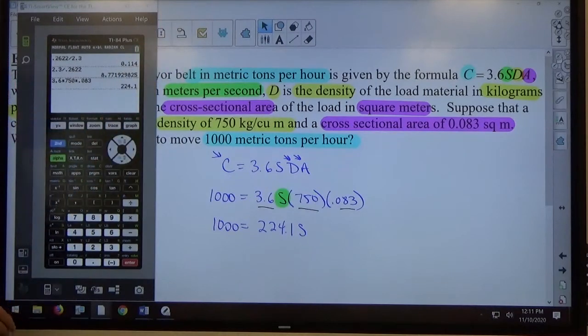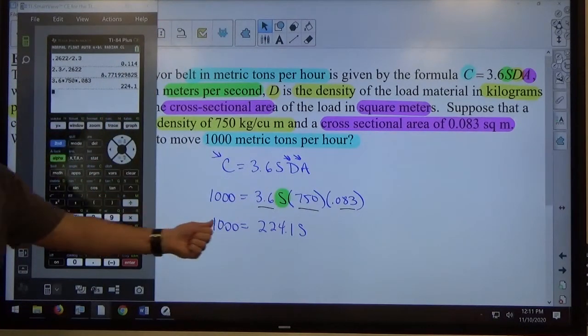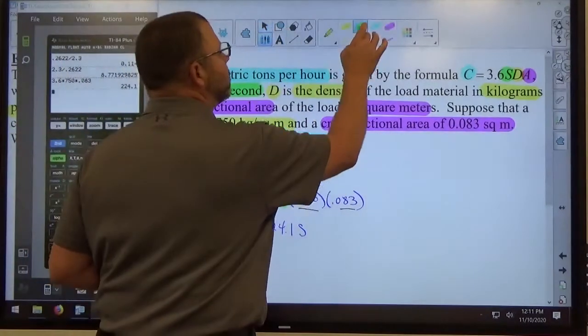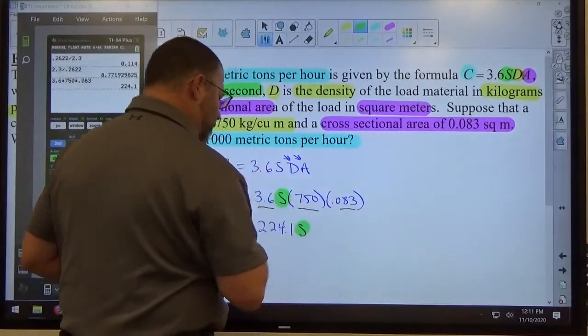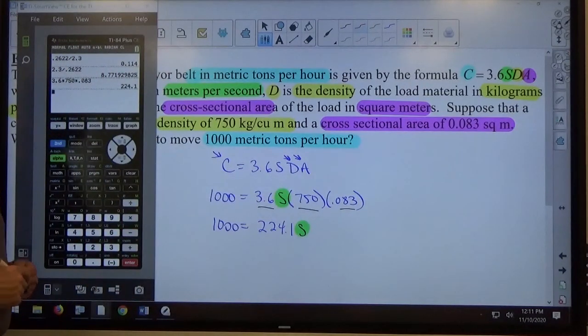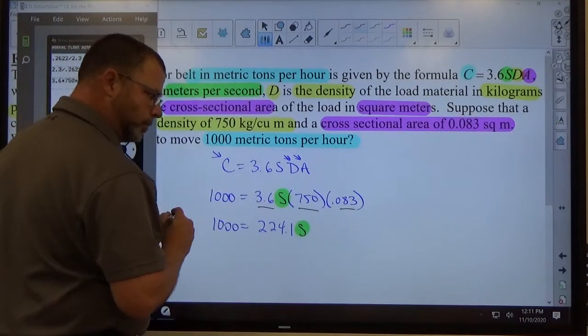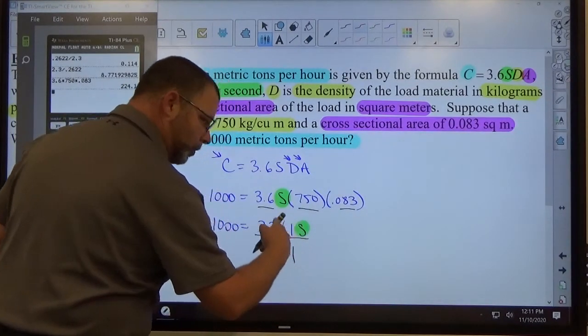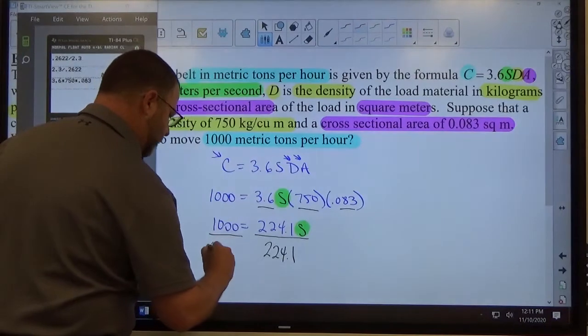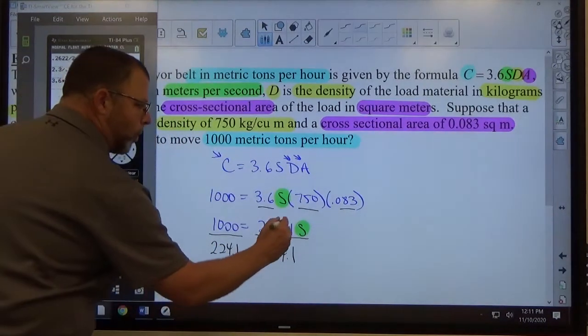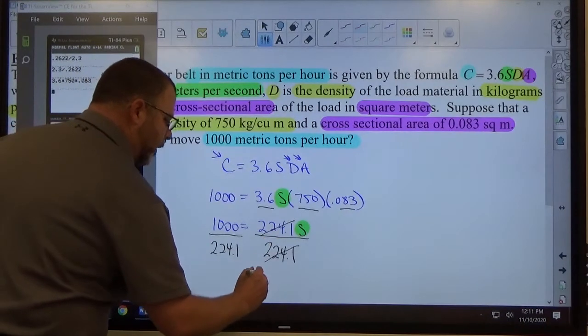So now I'm at the same place I was in the other four problems. I've got something happening to my variable, in this case S. S is my variable. What's happening to my variable is being multiplied by 224.1. So division by what? Division by 224.1. Whatever's happening to the letter, do the opposite to both sides. So the 224.1 divided by 224.1 makes 1S.